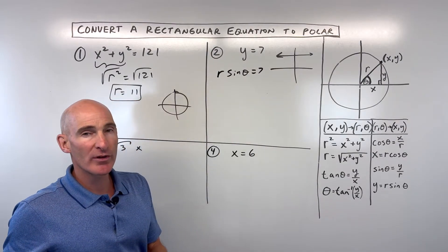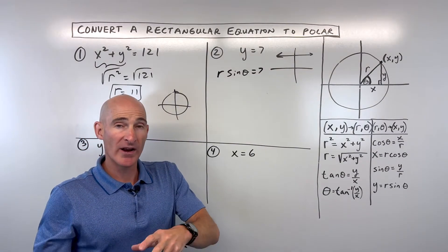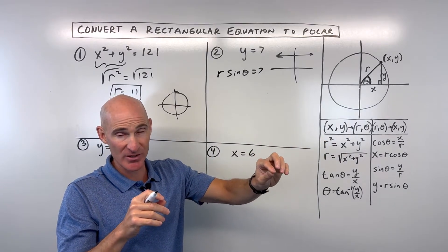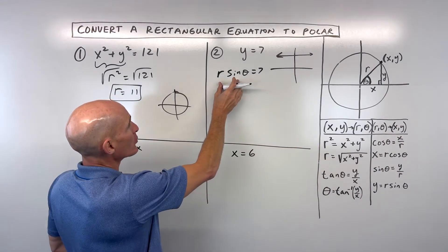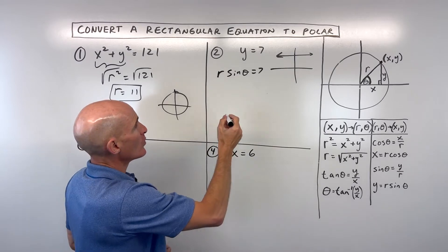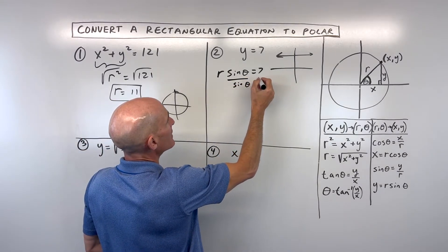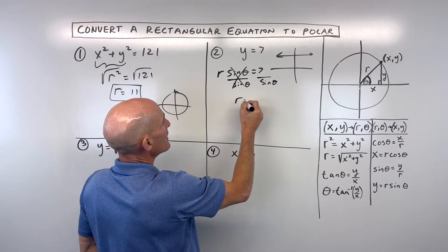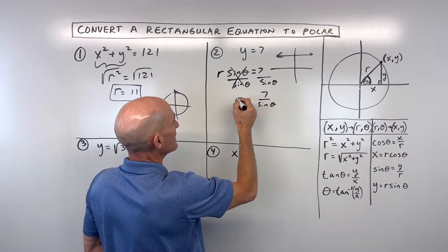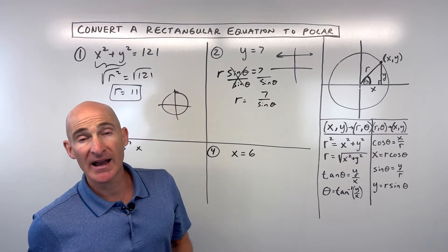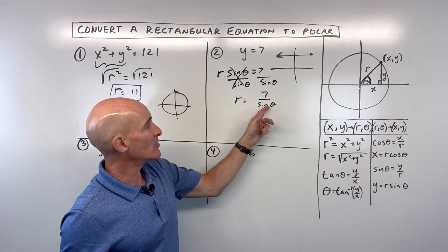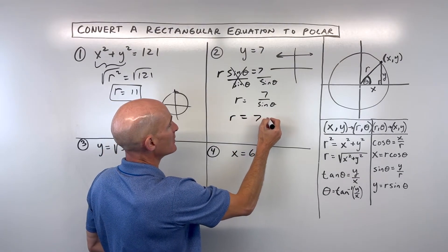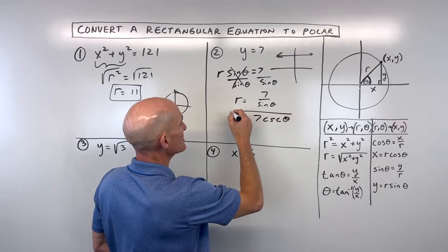And just like how when we worked with equations earlier, like in Algebra 1, a lot of times we would get the y by itself. We'd say y equals mx plus b or y equals ax squared plus bx plus c. Here with polar, oftentimes we're going to get the r by itself. And so what we can do is we can divide both sides by sine of theta to get r by itself. And you're going to be left with r equals 7 divided by the sine of theta. But you probably remember when you talked about trig identities that what's the reciprocal of sine? Cosecant. So 1 over sine is equal to cosecant.